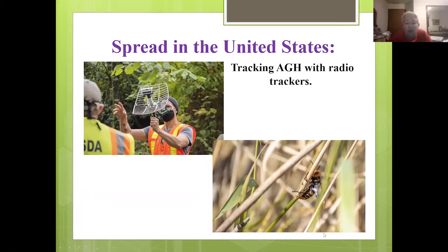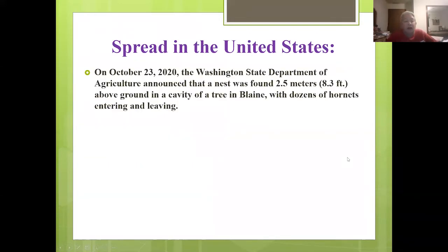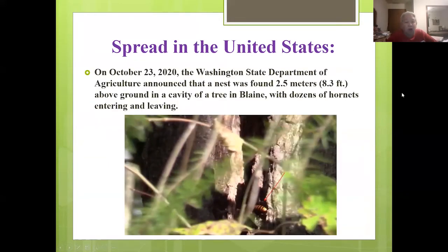You can see a little radio tracker on the hornet and the receiver that picks up those radio signals used for tracking. On October 3rd, 2020, the Washington State Department of Agriculture announced that a nest was found 8.3 feet above ground in the cavity of a tree in Blaine, with dozens of hornets entering and leaving.